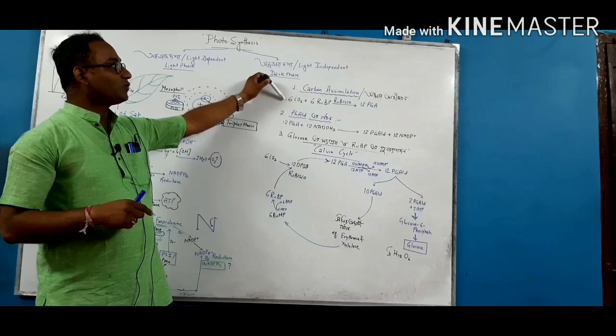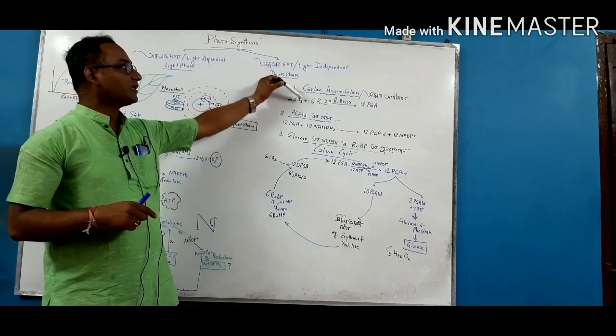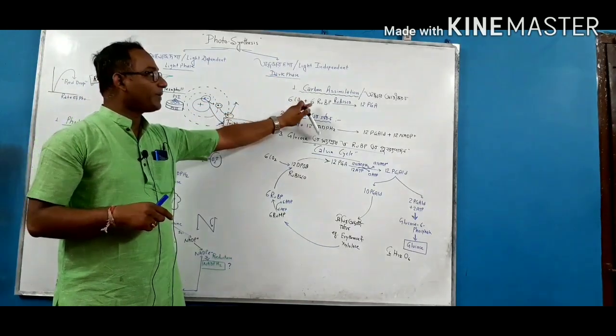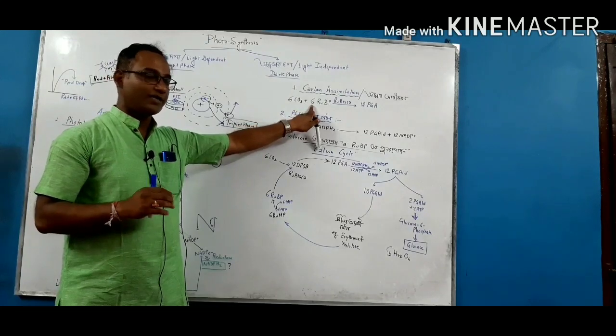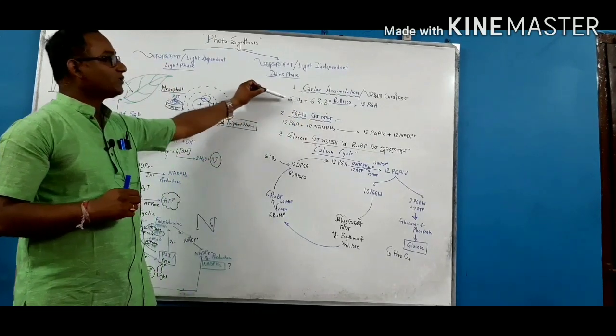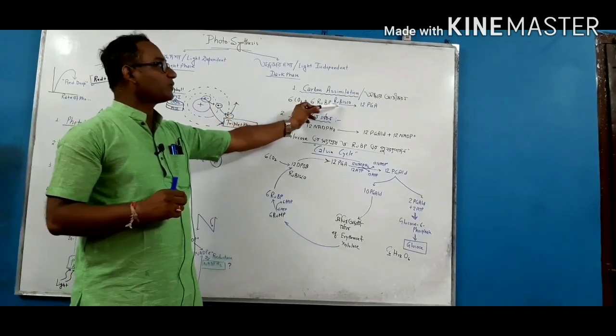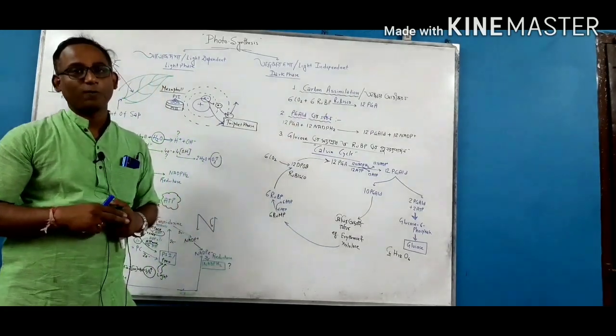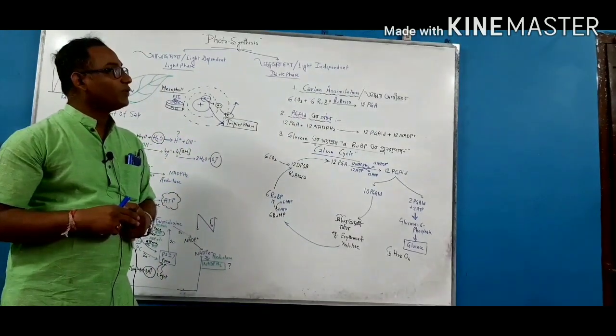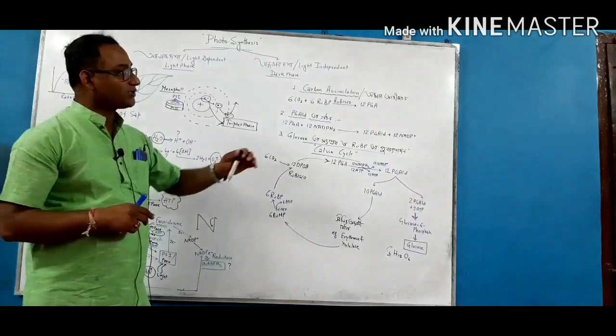We can see that 6CO2 provides 6CO2 plus 6RUBP. 6RUBP is already present as an organic component. 6CO2 plus 6RUBP can be used as rubisco, ribulose bisphosphate carboxylase oxygenase.